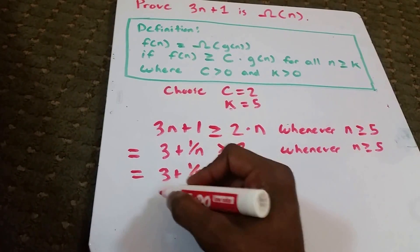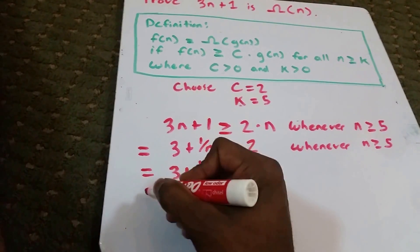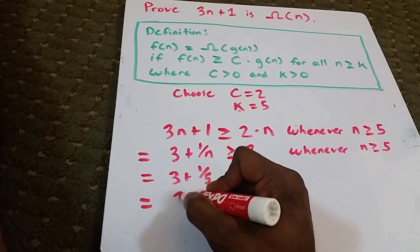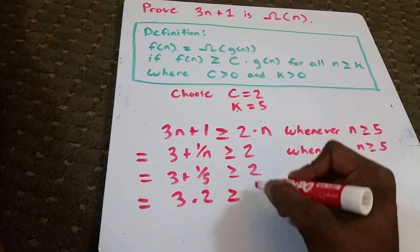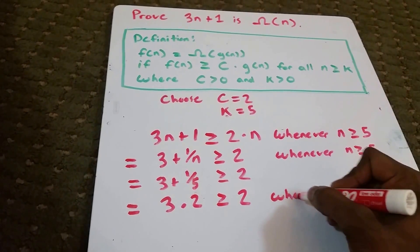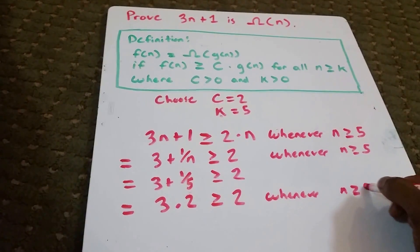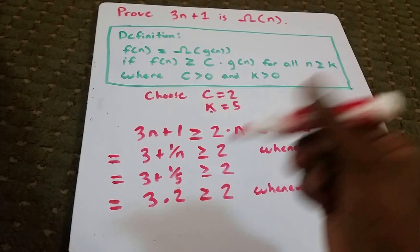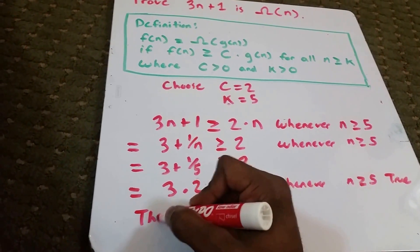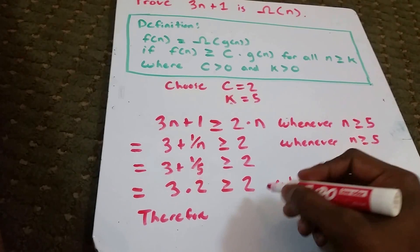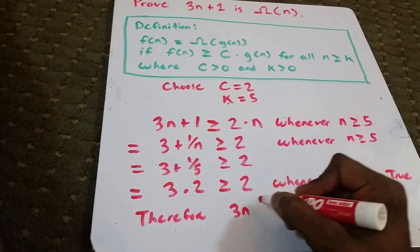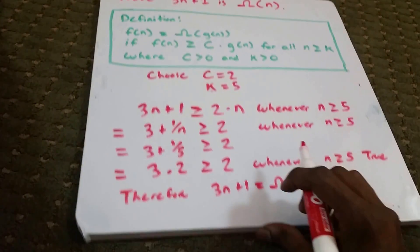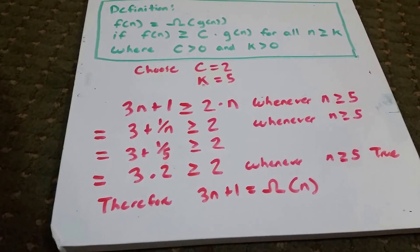Let's see if this is true. Well, you can already see it's true. We have 1 divided by 5 is 0.2. So we have 3.2 is greater than or equal to 2 whenever n is greater than or equal to 5, and this is always true. Therefore, 3n plus 1 is big omega of n. That's it. Thank you guys and please subscribe.